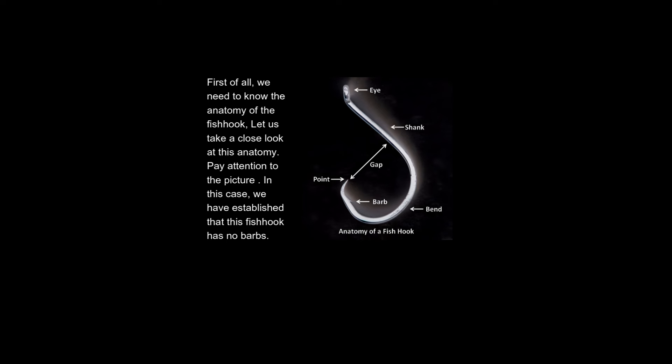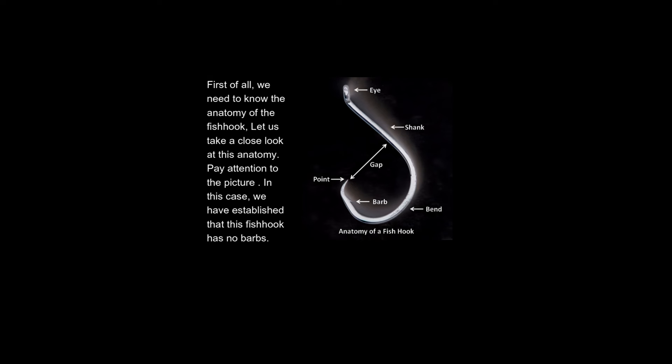First of all, we need to know the anatomy of the fishhook. Let us take a close look at this anatomy. Pay attention to the picture. In this case, we have established that this fishhook has no barbs. So we can retrieve the fishhook with a simple maneuver. This is the most important trick in this case.